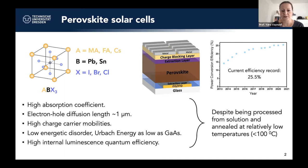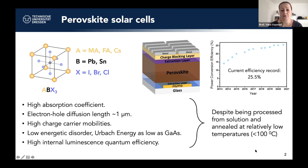The reason these materials are so fascinating is that their properties are tailor-made for photovoltaics. They have very high absorption coefficients, very large diffusion lengths for electrons and holes, and relatively high charge carrier mobilities. Most interestingly, they show very low energetic disorder — Urbach energies as low as those for gallium arsenide — and a high internal luminescence quantum efficiency, meaning recombination is very low. All of this is achieved despite processing from solution without high-temperature annealing.